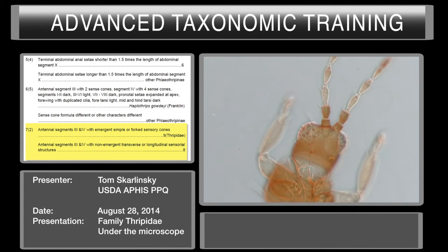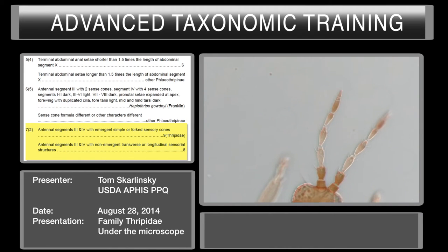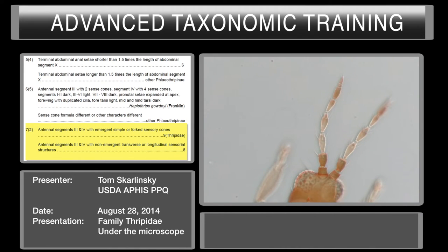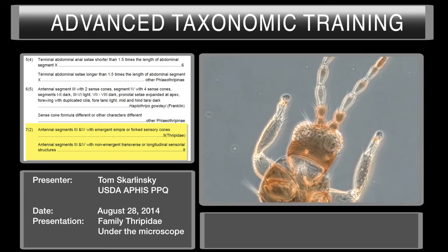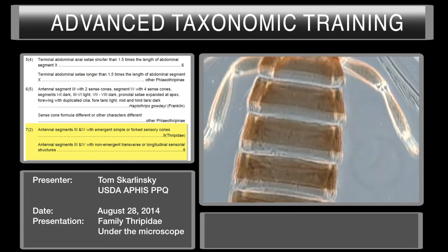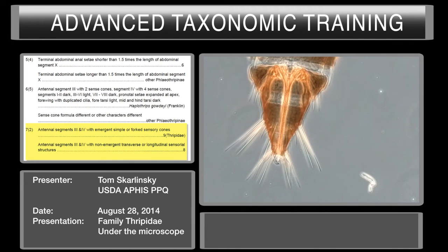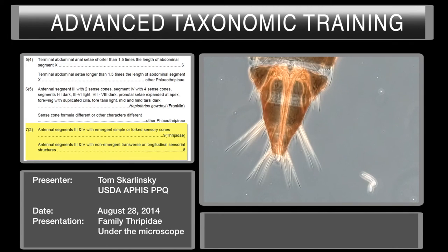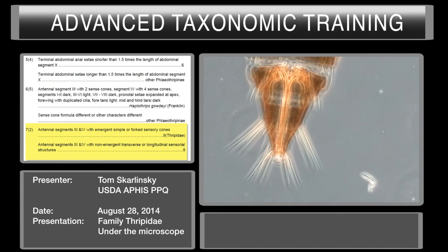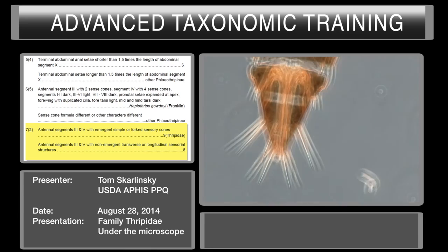So we've pretty much established that on this specimen we have the forked sense cones, and we have a conical terminal abdominal segment that doesn't fully enclose. So we have Thripidae.